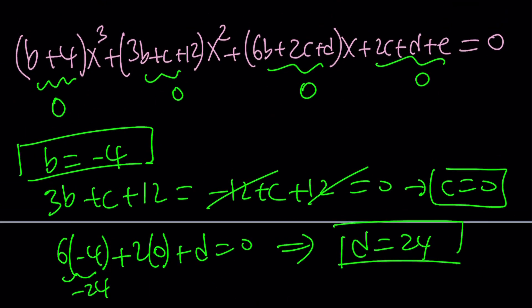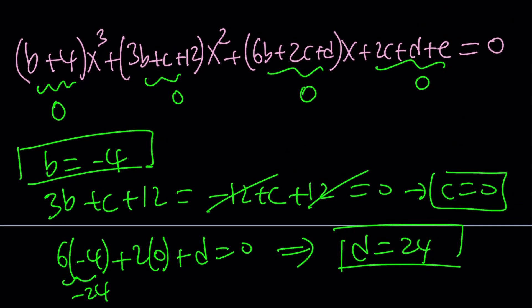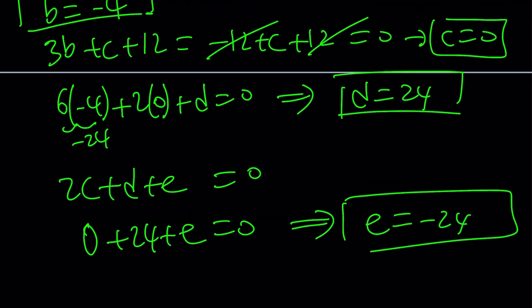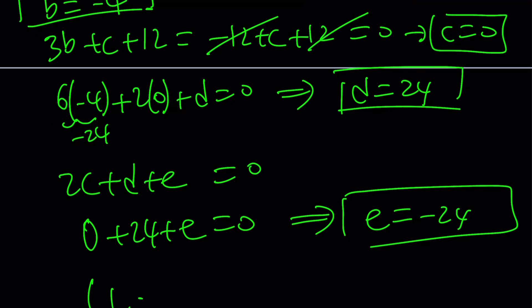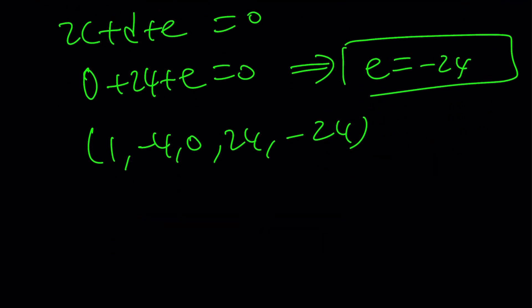Let's make an ordered quintuple with these values. A was one. So A is one, B is negative four, C is zero, D is 24, and E is negative 24. So these are the A, B, C, D, E values. Obviously A is one which is the leading coefficient, right? What am I going to do with this? I'm going to plug those in.